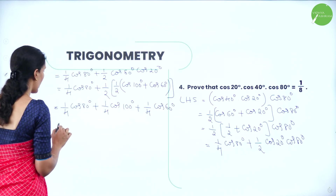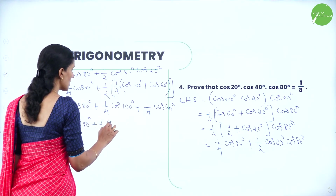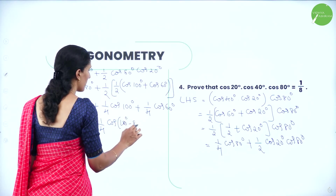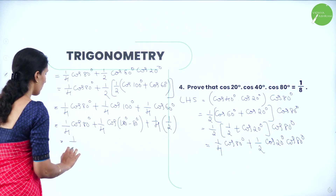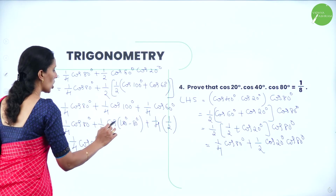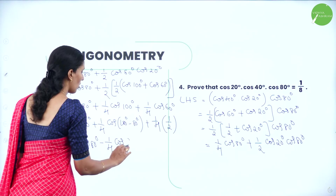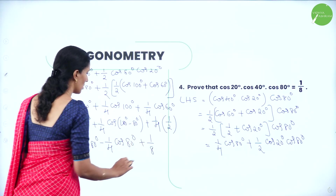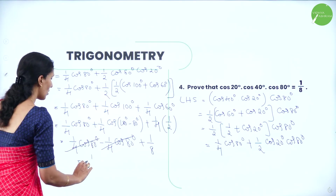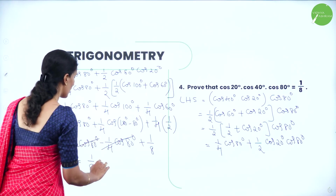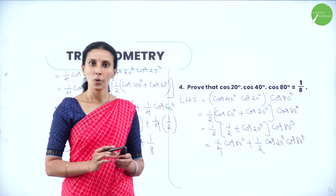Write cos100° = cos(180°−80°) = −cos80°. So: (1/4)·cos80° + (1/4)·(−cos80°) + (1/4)·cos60°. The cos80° terms cancel. We are left with (1/4)·cos60° = (1/4)·(1/2) = 1/8. Hence the result is proved.